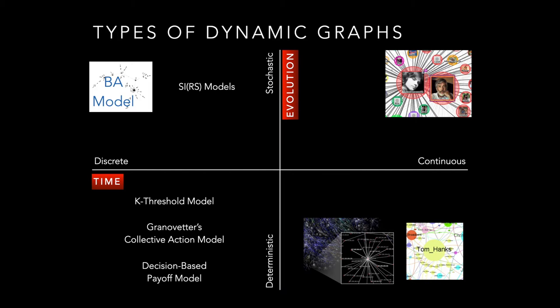Social networks are generally continuous and stochastic — who you engage with can be considered relatively random. In the bottom-left quadrant, we have discrete deterministic models like k-threshold models, collective action models, or payoff models, where we know what should happen in the next time step. The internet and IMDB network are continuous but deterministic: when a new movie is created, we know who is in it, and when a server is added to the internet, we know where it connects.